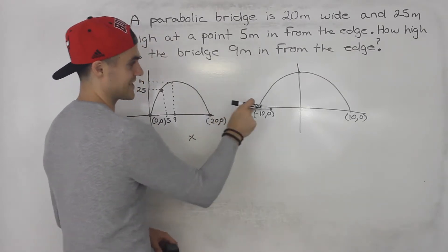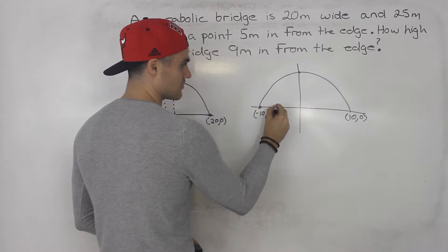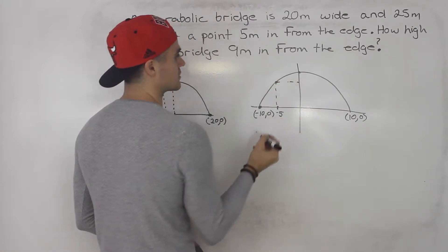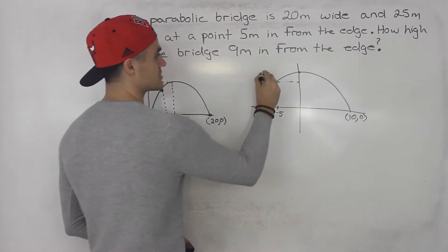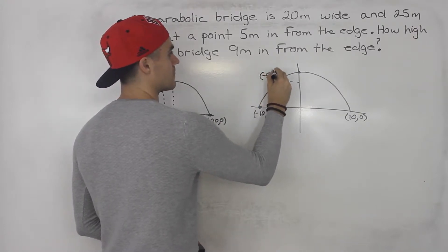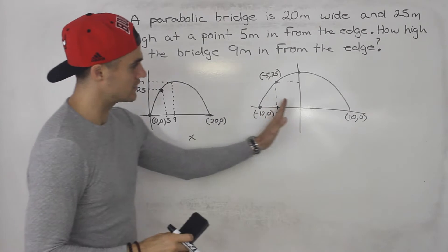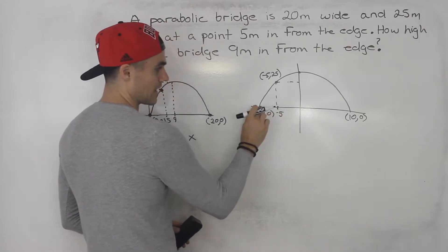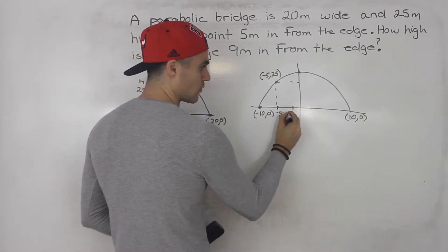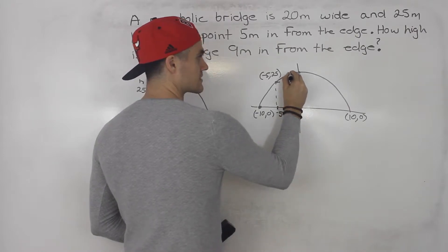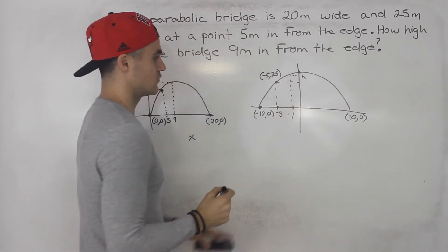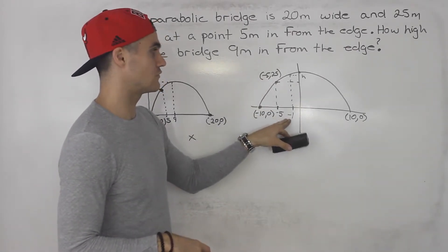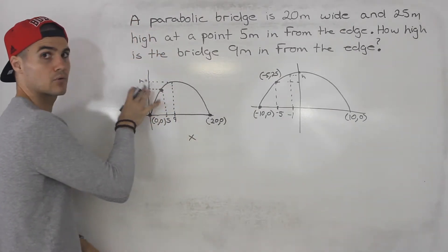And then we know five meters in from the edge, so negative 10 plus 5, so basically at this point negative 5, the height is going to be 25. So this point here is going to be negative 5 and 25. And then they're asking 9 meters in from the edge, what is the height going to be? So 9 meters in from the edge, negative 10 plus 9, this would be at negative 1. So they're asking for that height right there. So if you make an equation with these two intercepts and this point, solve for that a value, and then you plug in negative 1 into that equation, you should get the same height that we're going to get here.